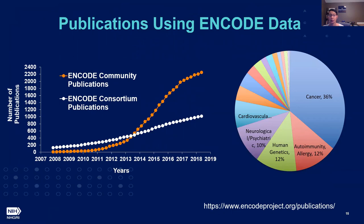A lot of ENCODE data is being shared via the portal and with the broader community through publications, and ENCODE data are widely used — as we know through the number of community papers using ENCODE data. The table here on the left-hand side shows the papers published over time, with a stopping point of August 2018, but as we've just seen there are several more papers coming out.